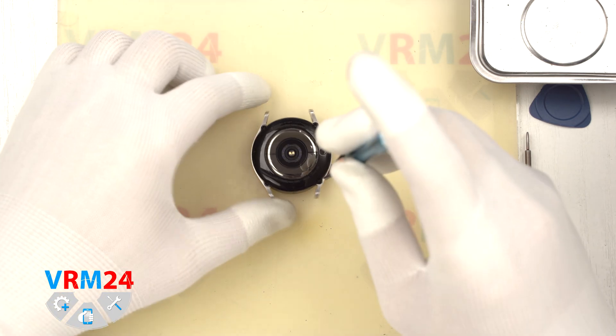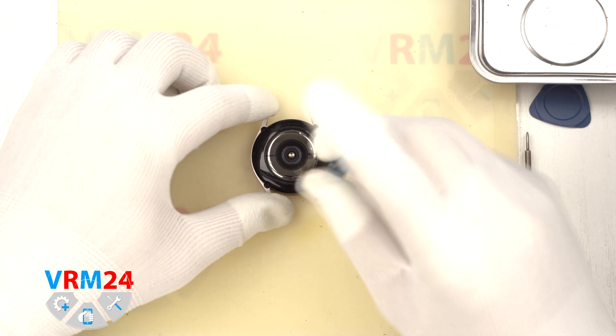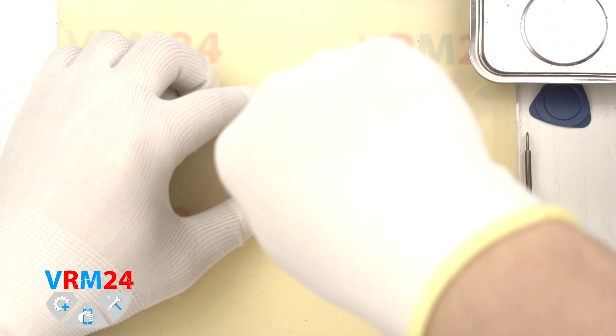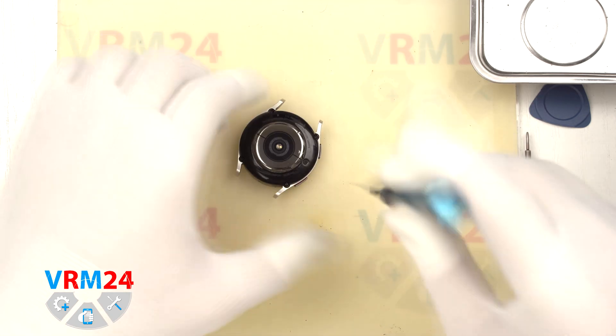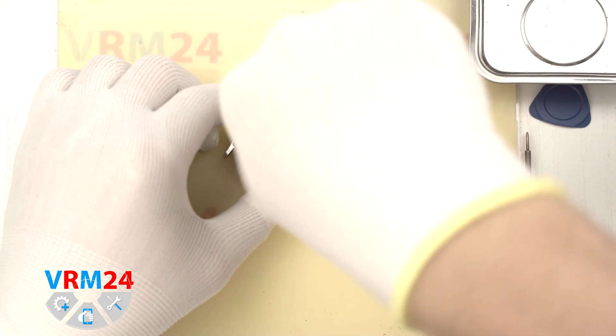We preheated the back cover to approximately 70 degrees Celsius or 140 degrees Fahrenheit. For this we used a heating mat, but you can also use a hairdryer.